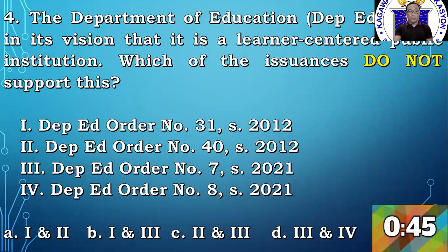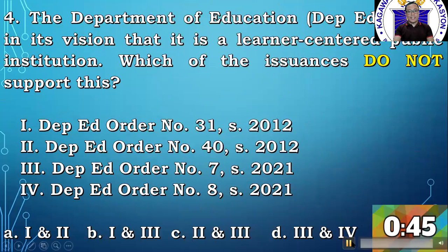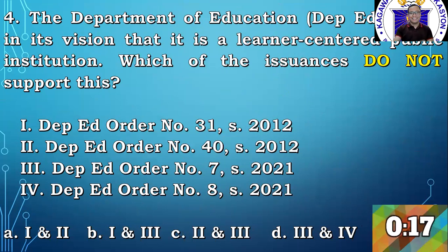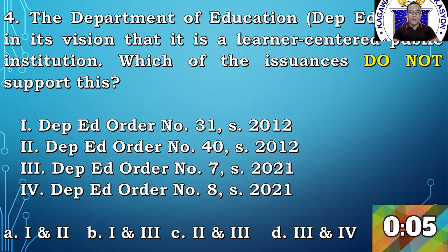Which of the issuances do not support this? 1. DepEd Order number 31, series 2012. 2. DepEd Order number 40, series 2012. 3. DepEd Order number 7, series 2021. 4. DepEd Order number 8, series 2021. A: 1 and 2. B: 1 and 3. C: 2 and 3. D: 3 and 4. A lot of time. Down with our last 20 seconds. I hope you're having a good time. I know it's really hot, it's summer. But of course I have a bit of sacrifice as we all want you to pass the upcoming principals test. And time is up.